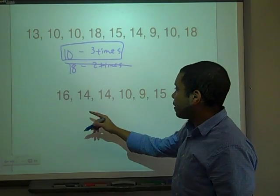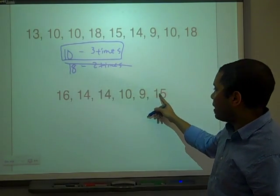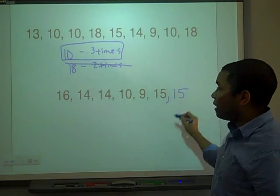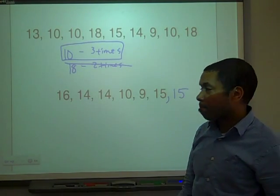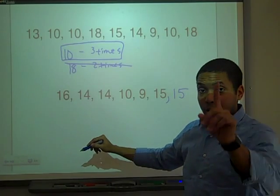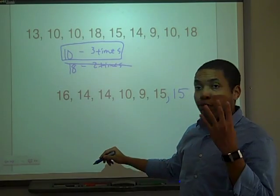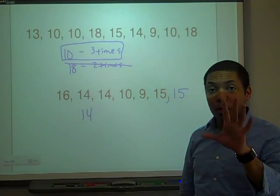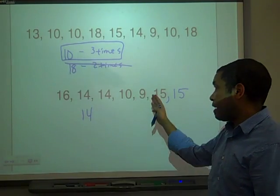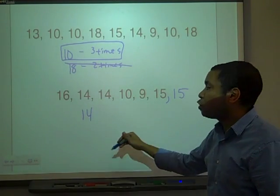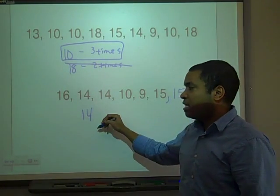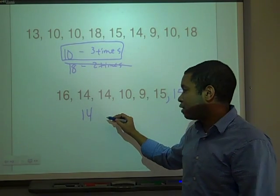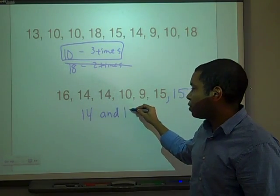Let's look at this dataset: 16, 14, 14, 10, 9, 15, and I'll add another 15. How many times does 16 occur? Once. How many times does 14 occur? Twice. How many times does 15 occur? Twice — the same as 14. So in this case, I have two modes. Both 14 and 15 each occur twice, which is the most frequent.